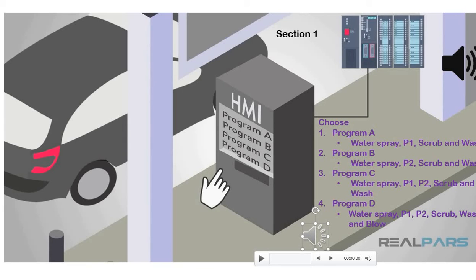Third, you may also put conditions in the ladder diagram that unless a program is selected, the car wash process will not be functioning.